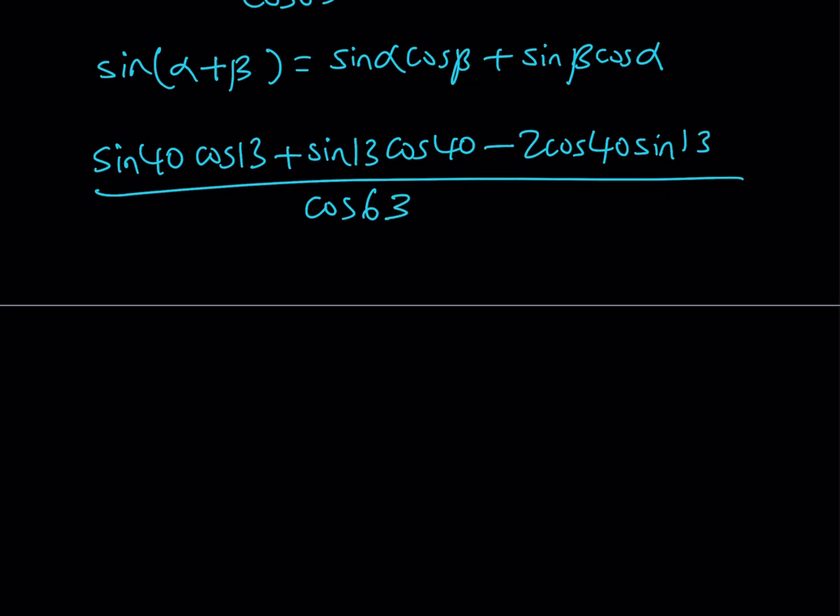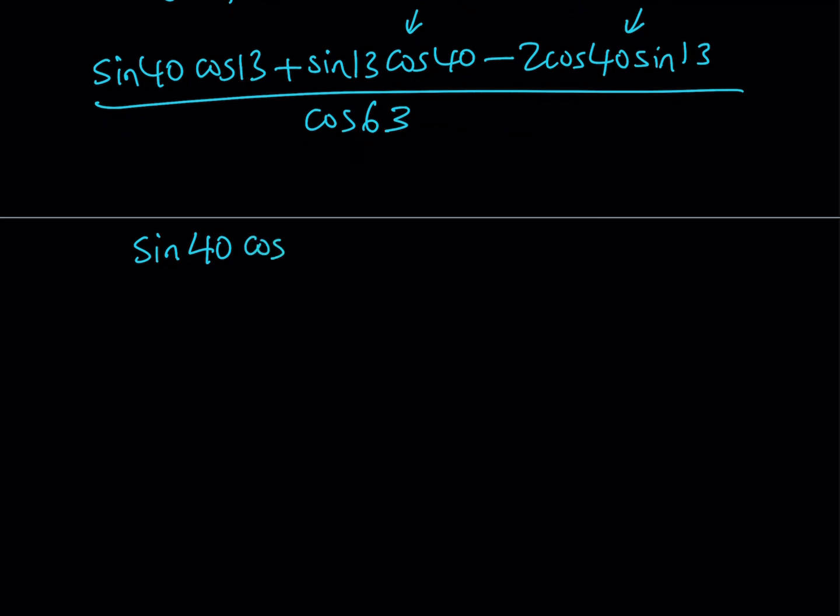Now once you expand this you're going to notice that we have some like terms. This one sine 13 cosine 40 and then we're subtracting 2 times the same thing. So 1 times something minus 2 times the same thing, that's going to give us negative 1 times the same thing. Once we simplify we can write it as sine 40 cosine 13 minus sine 13 cosine 40, and the whole thing is divided by cosine of 63 degrees.